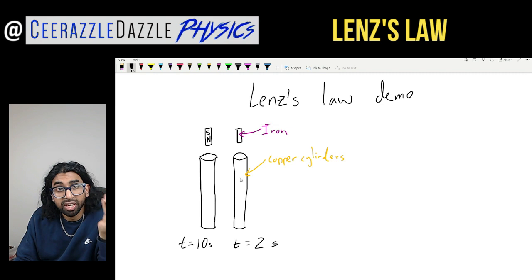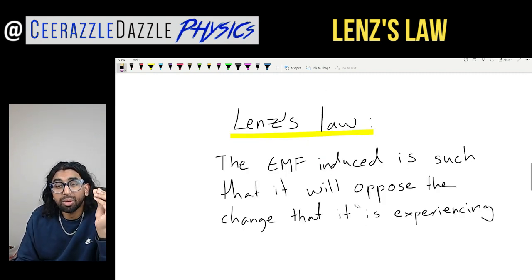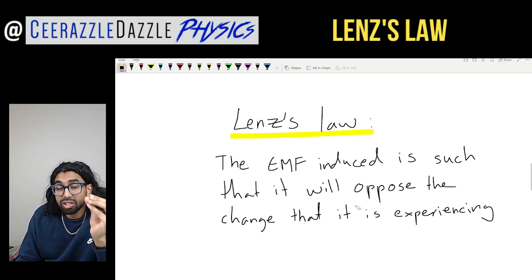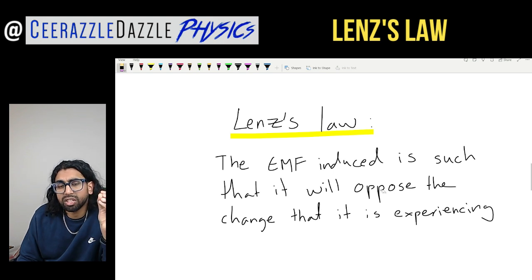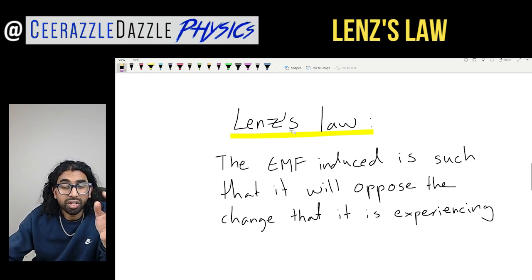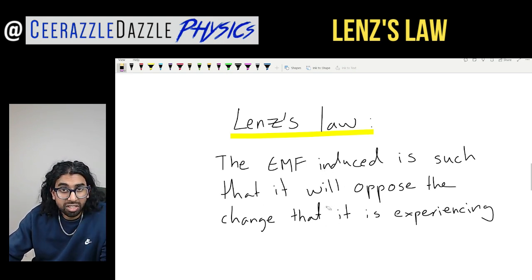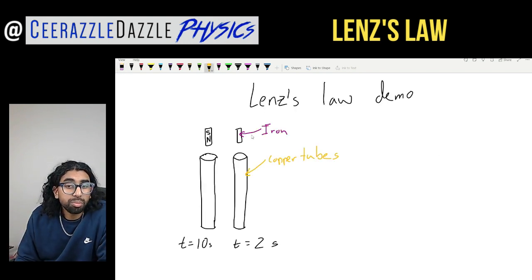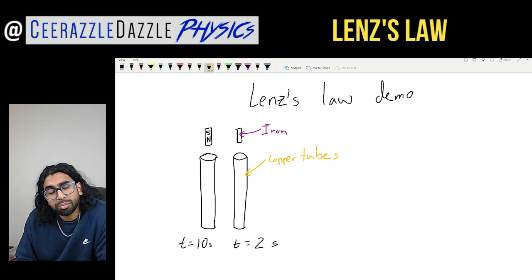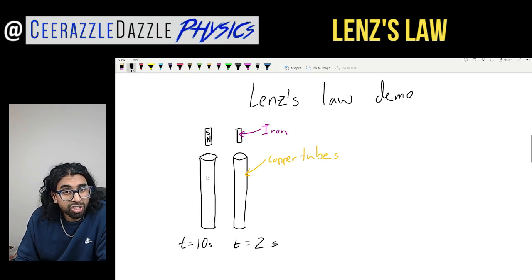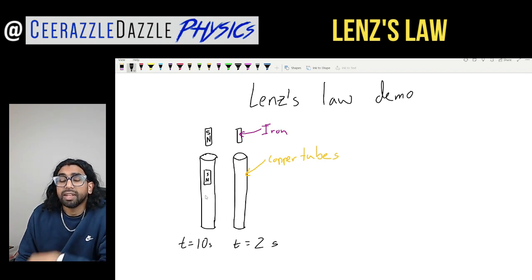So what exactly is Lenz's Law? Lenz's Law states: the EMF induced is such that it will oppose the change that it is experiencing. The EMF that is induced will oppose the change it is experiencing. The first time you read it there are quite a lot of words, but let's put it into context with the previous demonstration.